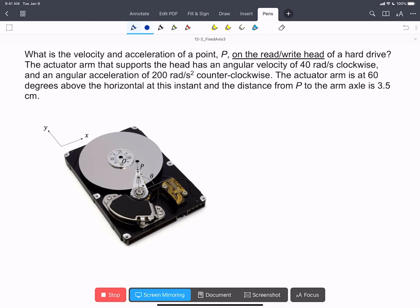In this problem, we're going to look at the velocity and acceleration of the read-write head on this hard drive. So it's this point P attached to the actuator arm.